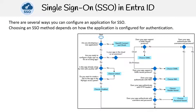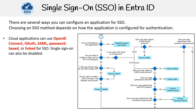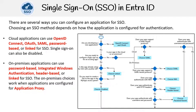There are several ways you can configure an application for SSO. Choosing an SSO method depends on how the application is configured for authentication. Cloud applications can use OpenID Connect, OAuth, SAML, password-based, or linked for SSO. Single sign-on can also be disabled. On-premises applications can use password-based, integrated Windows authentication, header-based, or linked for SSO. The on-premises choices work when applications are configured for application proxy.